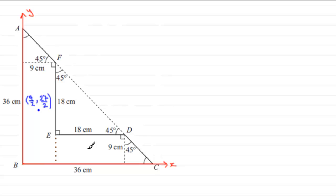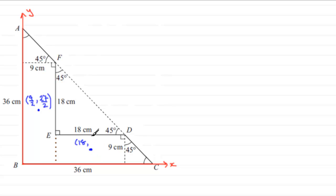For the center of mass of this second rectangle, again it's in the middle. The x-coordinate is 9 plus half of 18, so 9 plus 9 equals 18. The y-coordinate is half of 9 centimetres, which is 9 over 2.